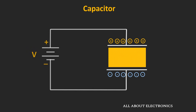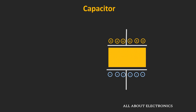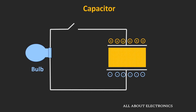Even if we remove the voltage source, the charges developed across the two plates will remain as they are. Unless we apply a conductive path to this capacitor, the charges across the two plates will remain as they are.